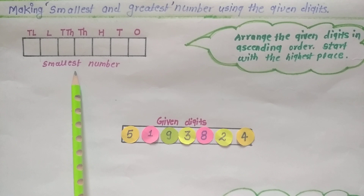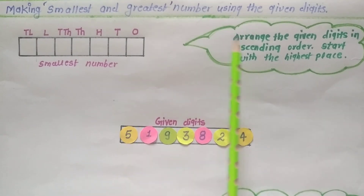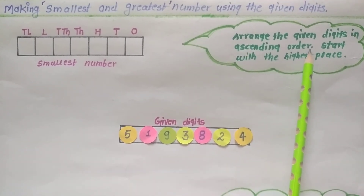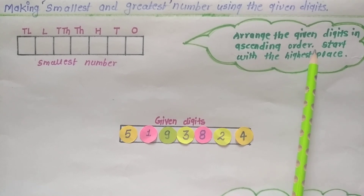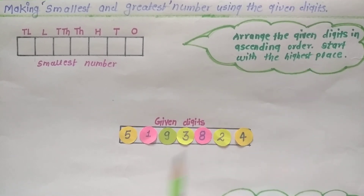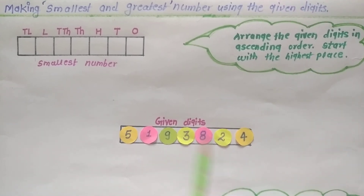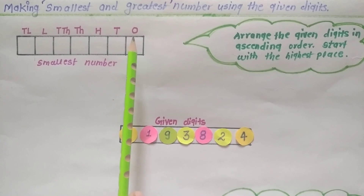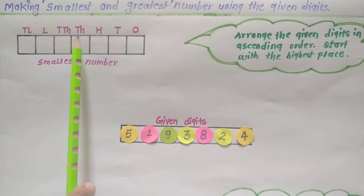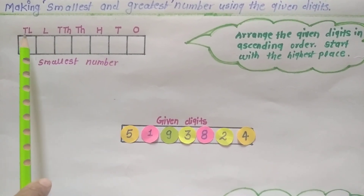Now to form the smallest number first, we arrange the given digits in ascending order. Ascending order means from smallest to greatest. As here I have taken 7 digits, I mark 7 places: 1, 10, 100, 1000, 10,000, lakh and 10 lakh.